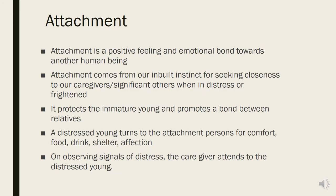Our first attachment relationships are with parents, caregivers, or other significant family members — people that we've been around in our formative years. These attachment relationships will later influence the patterns and quality of our relationships with others as we move through life, for good and for bad.